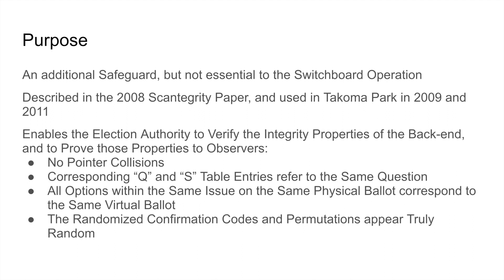The pre-election audit is an additional safeguard but not essential to the switchboard operation. It is described in the 2008 Scantegrity paper and was used in Tacoma Park in 2009 and 2011. It enables the election authority to verify the integrity properties of the back end and to prove those properties to observers.